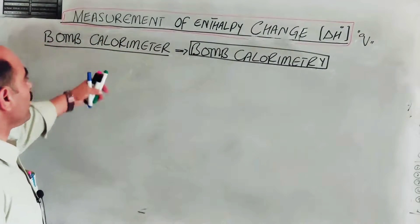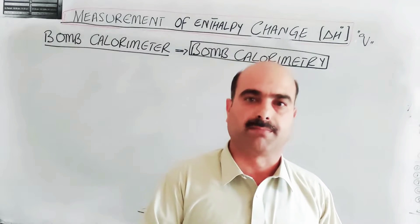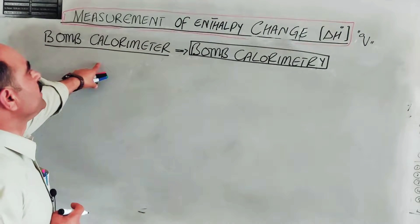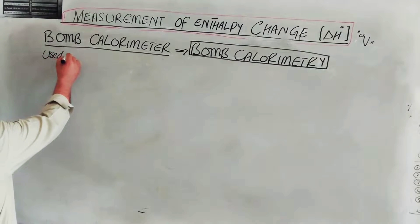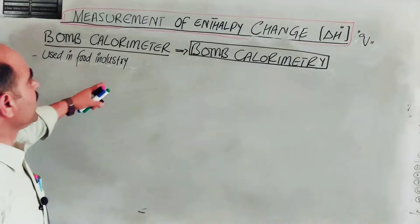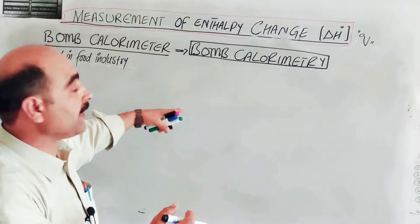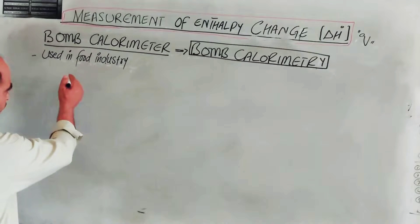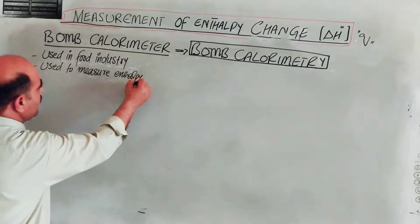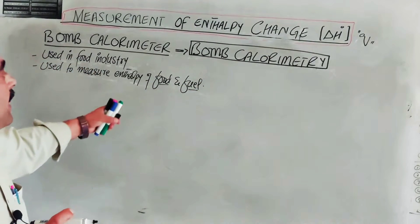The bomb calorimeter — its shape is just like a bomb. It measures internal energy. Bomb calorimeter is used in the food industry. It is used to measure the enthalpy of food and fuel — that is, how much energy or heat a food or fuel provides. This is used to measure the enthalpy or heat content of food and fuel.